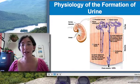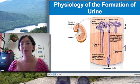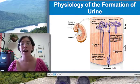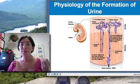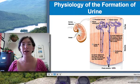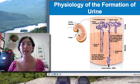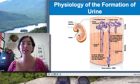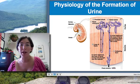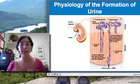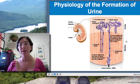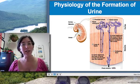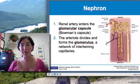The nephron is this microscopic structure that is the functional unit of the kidney — the parenchyma. This is where wastes get filtered out and urine gets made, and there's a specific order to it that we're going to discuss.